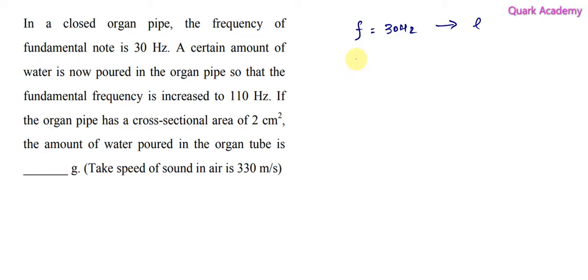Now some amount of water is poured. Due to that, the length in which the air is flowing will get reduced, and due to that the fundamental frequency is going to change. Let's consider that as f dash, and that is 110 Hertz. For this, the length, let's consider that it has to be L dash. Now we need to find how much amount of water has been poured to get this fundamental frequency.